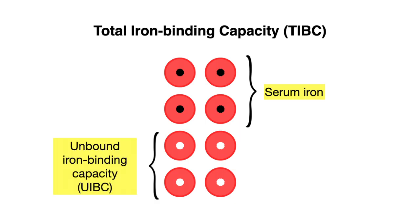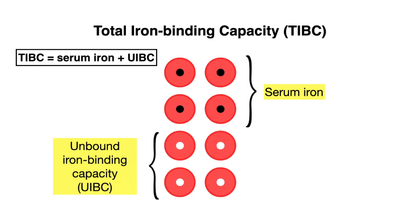So if we add the serum iron to the UIBC we get our total iron binding capacity, or TIBC. The TIBC essentially reflects all of the available iron binding sites on transferrin, whether they are occupied by serum iron or not.